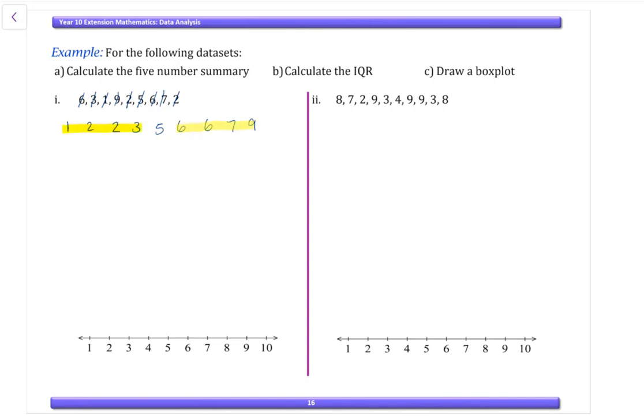Our median is five. We now have to separate our two halves into half again. So we've got four values in each half. Our Q1 is going to be the average of those, so that's two. So Q1 is two. And then we look at these two values and our Q3 or our upper quartile is six plus seven divided by two, which is 6.5.